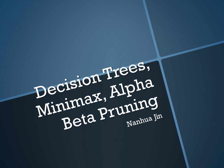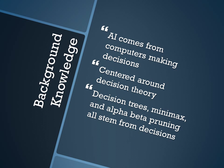My name is Nanhao Jin and I'll be talking to you today in this online video about decision trees, minimax, and alpha-beta pruning. As a little background, artificial intelligence comes from computers making decisions — it's centered around decision theory. Decision trees, minimax, and alpha-beta pruning all stem from decision theory.